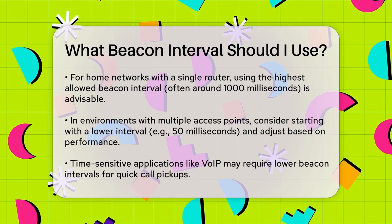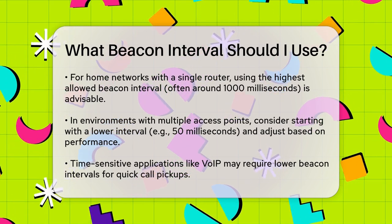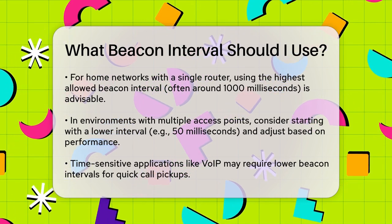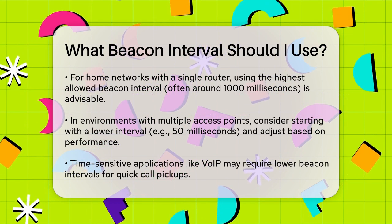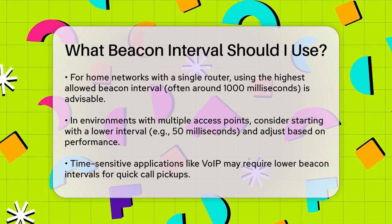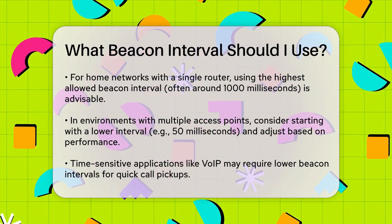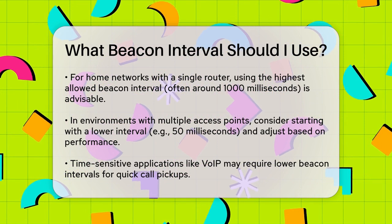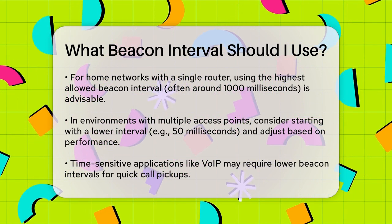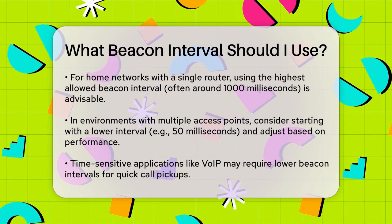If you have multiple access points and are experiencing issues with roaming, you might need to lower the beacon interval. Starting with a value like 50 milliseconds and then tweaking it while monitoring your network's performance can help.